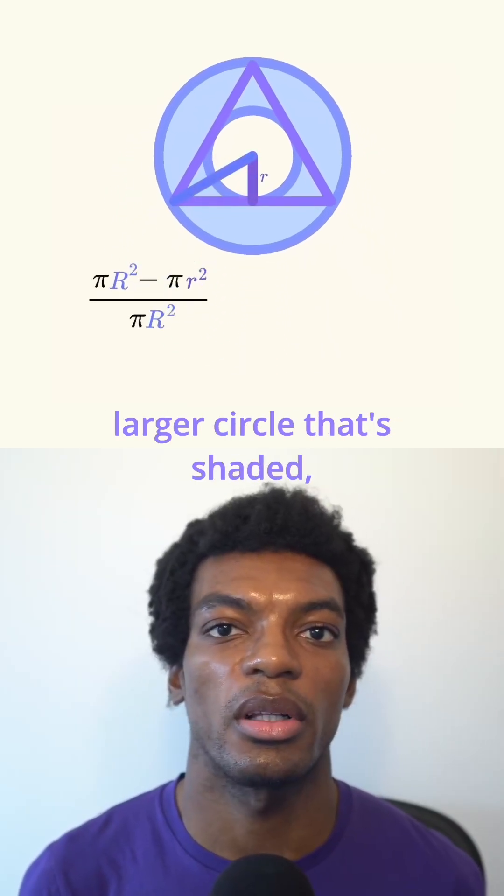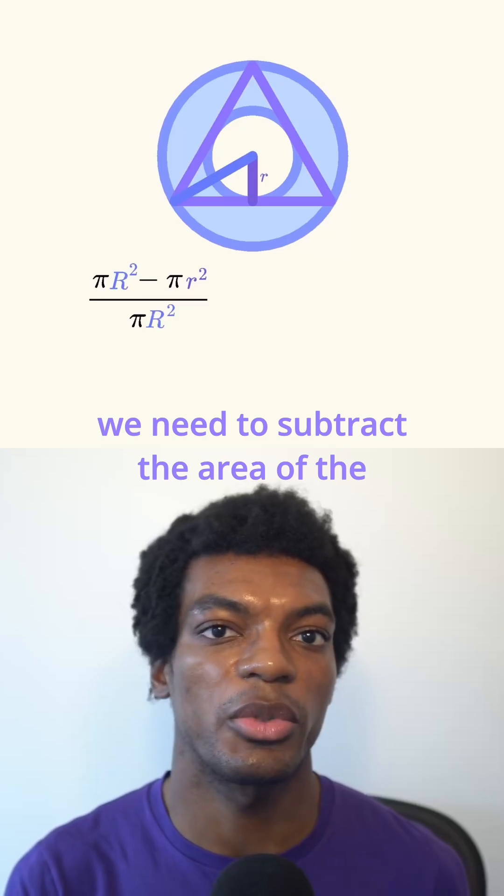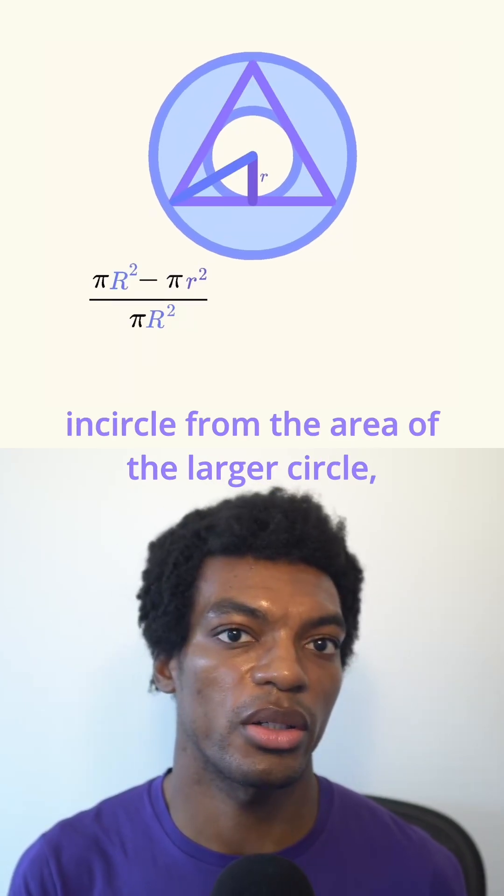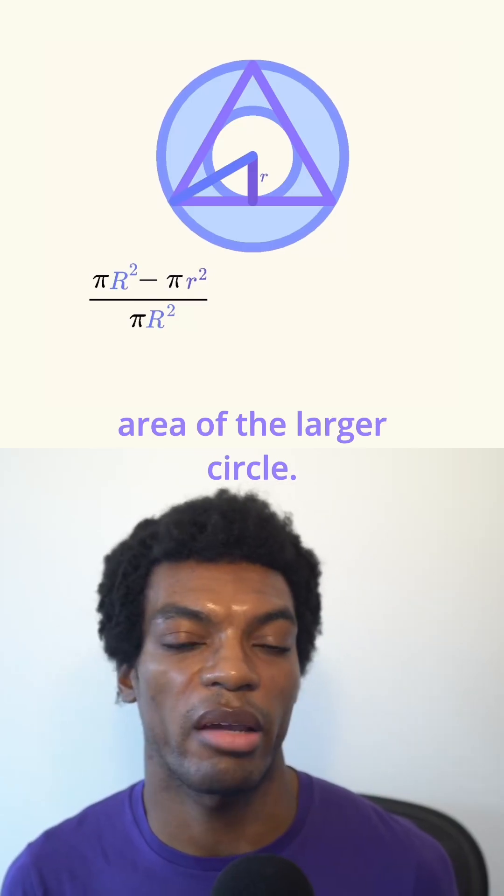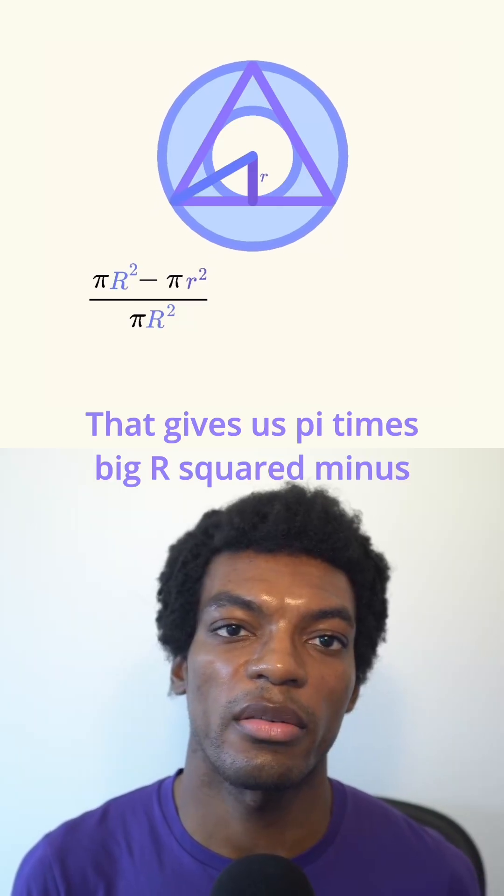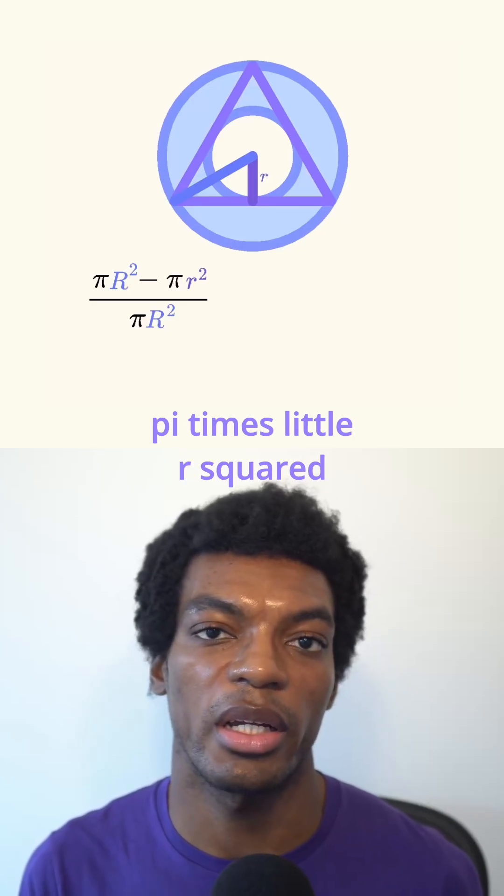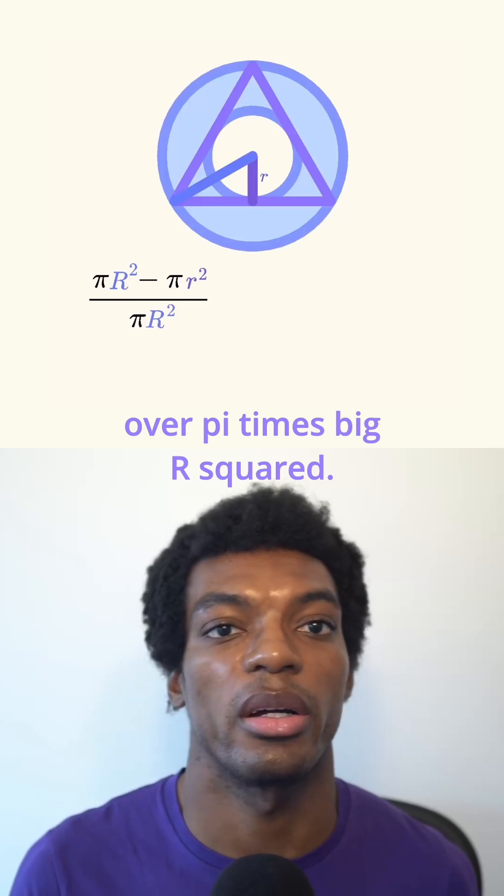To find the fraction of the larger circle that's shaded, we need to subtract the area of the incircle from the area of the larger circle, and then divide that by the area of the larger circle. That gives us pi times big R squared minus pi times little r squared over pi times big R squared.